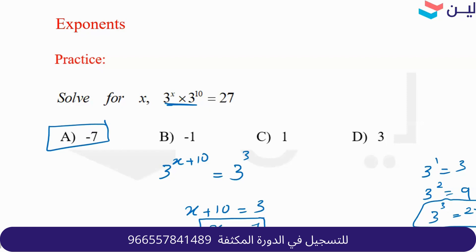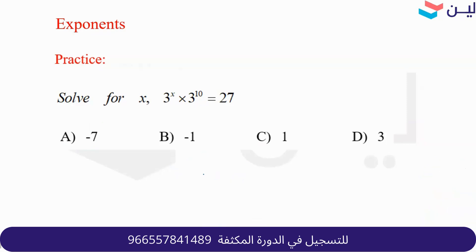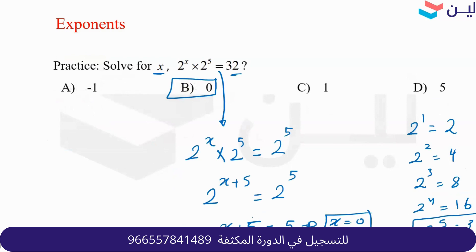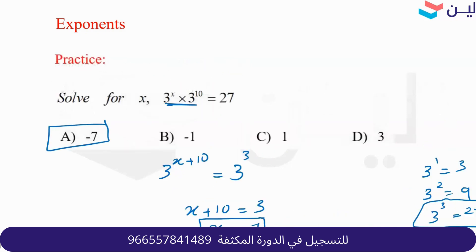These problems are straightforward. A student asks about moving 10 to the other side. Moving 5 to the other side gives negative 5. So 5 minus 5 equals 0.